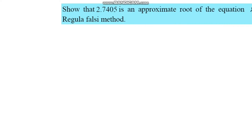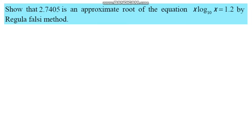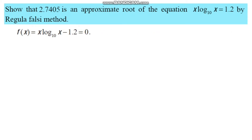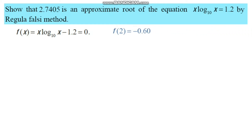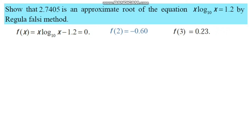Show that 2.7405 is an approximate root of the equation x·log₁₀(x) = 1.2 using the Regula Falsi method. The equation is rewritten as x·log₁₀(x) minus 1.2 = 0, denoted f(x) = 0. We compute f(2) ≈ -0.60 and f(3) ≈ 0.23. Since f(2) is negative and f(3) is positive, their product is negative, so the root lies between 2 and 3.